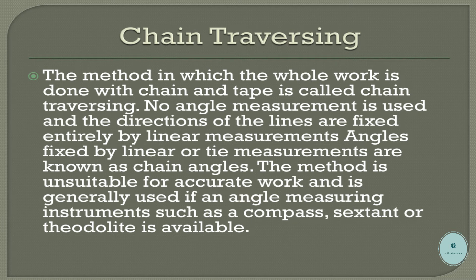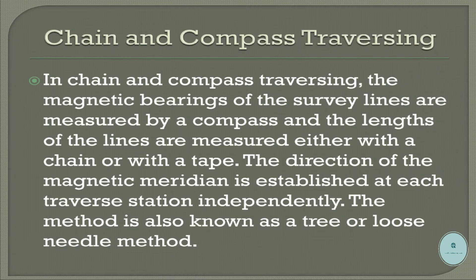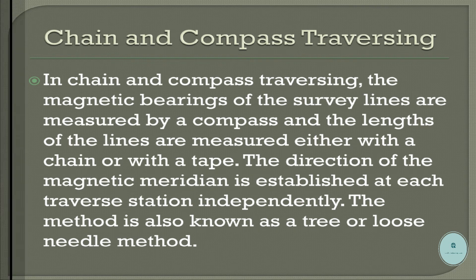Chain and compass traversing: in chain and compass traversing, the magnetic bearings of the survey lines are measured by a compass, and the lengths of the lines are measured either with a chain or with a tape. The direction of the magnetic meridian is established at each traverse station independently. The method is also known as the free needle or loose needle method.